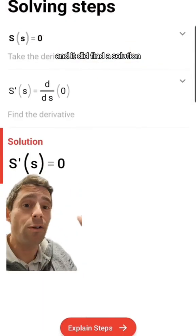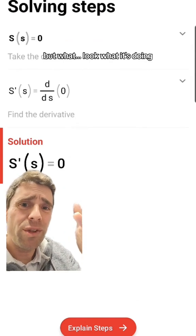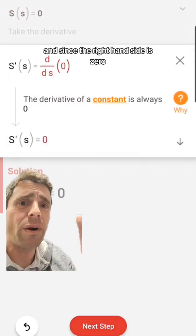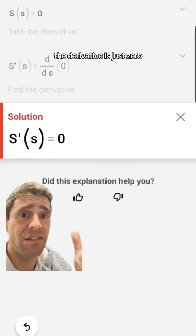And it did find a solution, but look at what it's doing. It's just calculating the derivatives of both sides. And since the right-hand side is zero, the derivative is just zero.